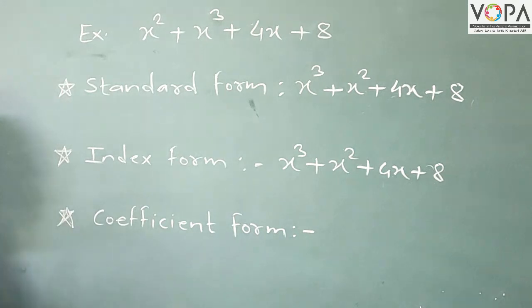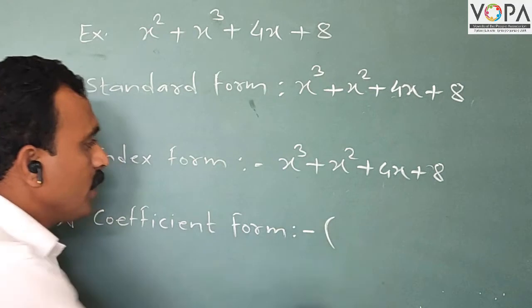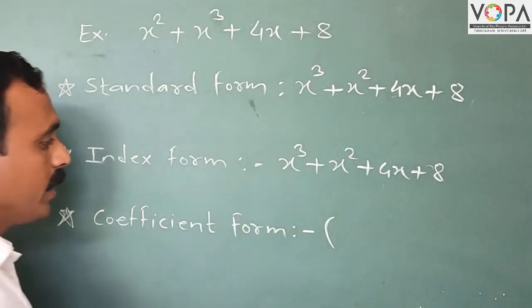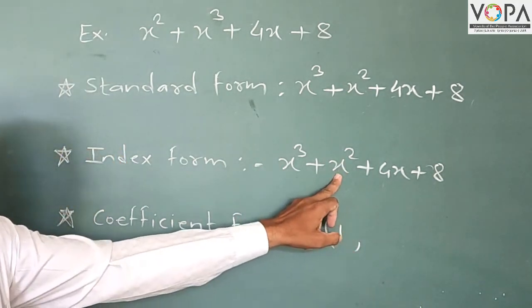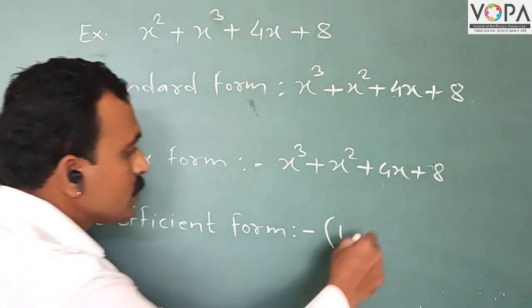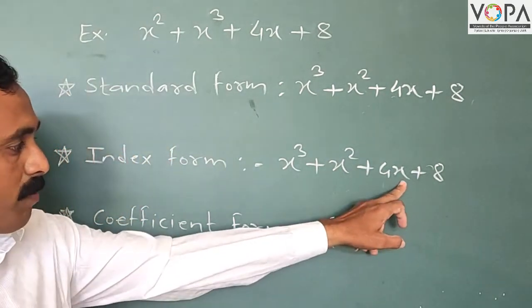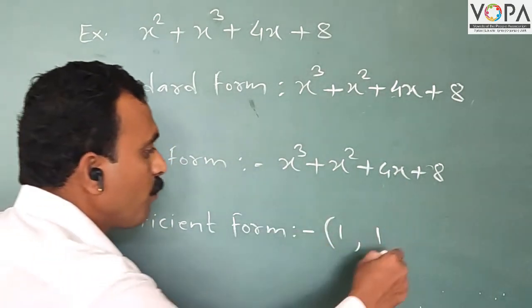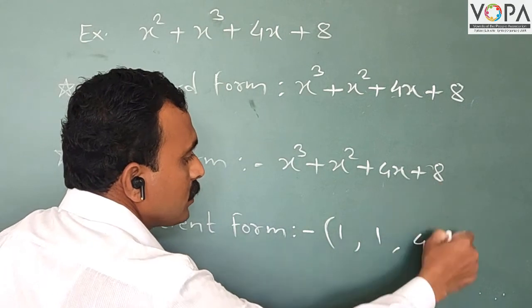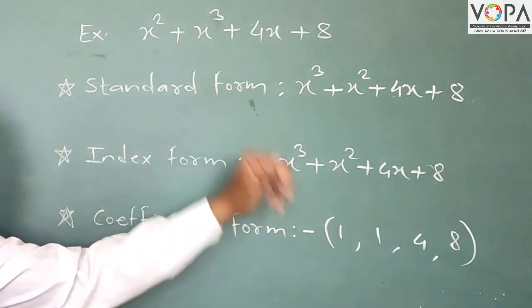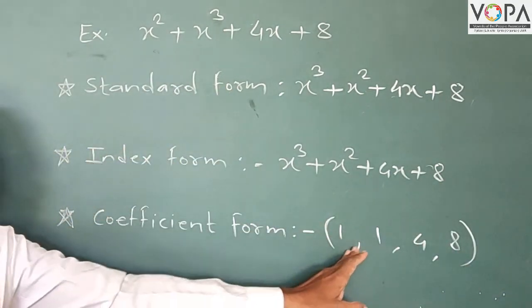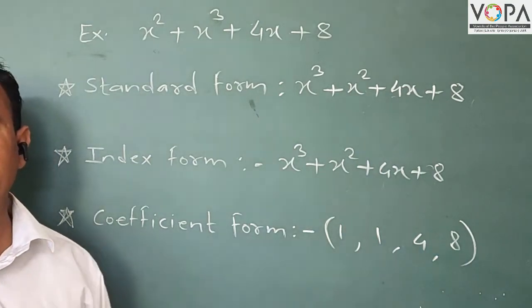For the coefficient form: coefficients are the multiples of the variables. The coefficient of x³ is 1, the coefficient of x² is also 1, the coefficient of x is 4, and the last term is 8. Therefore the coefficient form of that polynomial is (1, 1, 4, 8).